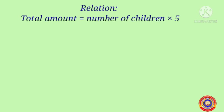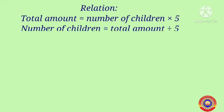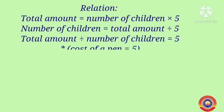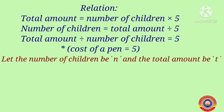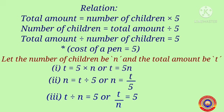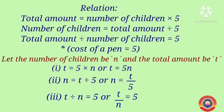Now we can write the relations: total amount = number of children × 5, and number of children = total amount ÷ 5, and total amount ÷ number of children = 5, where 5 is the cost of a pen. Using letters, let the number of children be n and the total amount be t. First relation: t = 5n. Second relation: n = t/5. Third relation: t/n = 5.